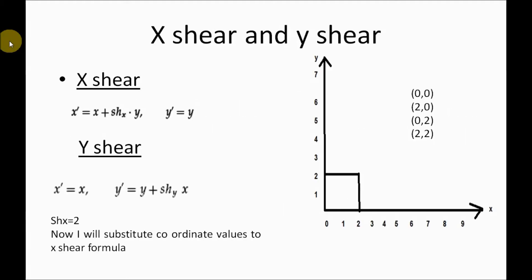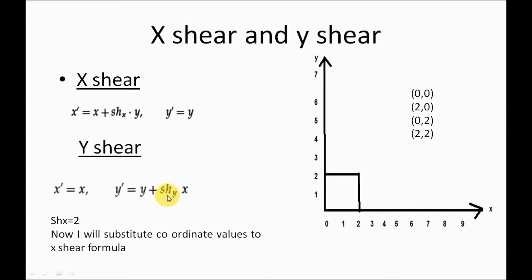In shearing there are two types: X-shear and Y-shear. For calculating the X-shear, the formula is: x' = x + Shx × y, y' = y. X-shear means shearing with respect to the x-axis. For Y-shear: x' = x, y' = y + Shy × x. Here Shx is the shearing factor with respect to x, and Shy is the shearing factor with respect to y. To demonstrate, I am considering a square object.